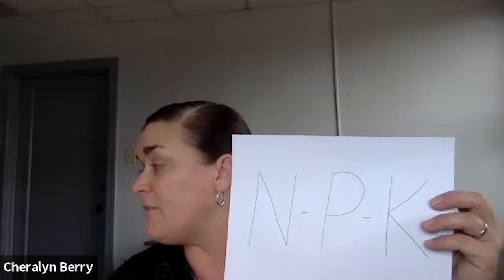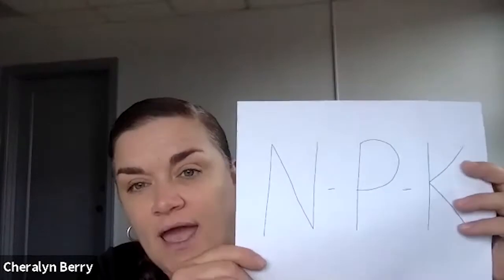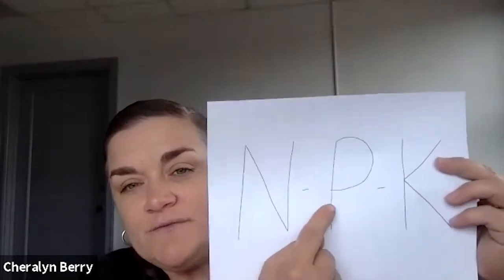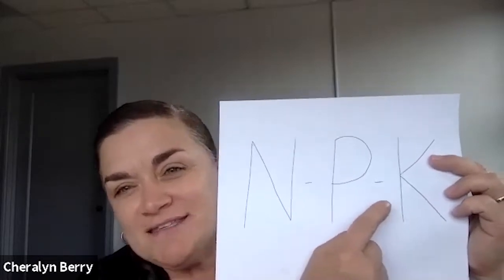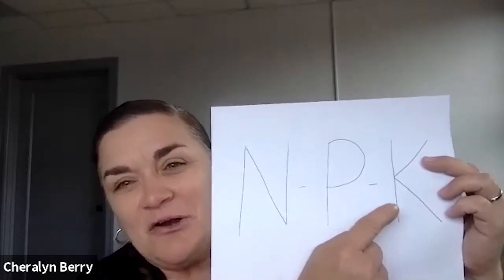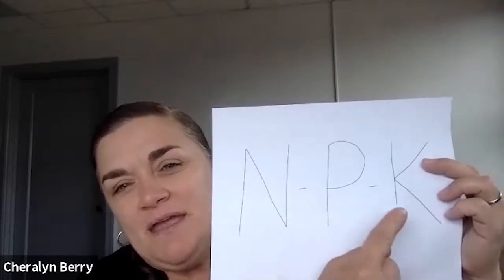By law, they have to put N, P, and K on the packaging. Maybe it's not on the front of the package, but it's always going to be somewhere on the package. They are always in the order N, P, K — nitrogen, phosphorus, potassium. The reason potassium has a K is because it's the Latin name for potassium, and it starts with a K.